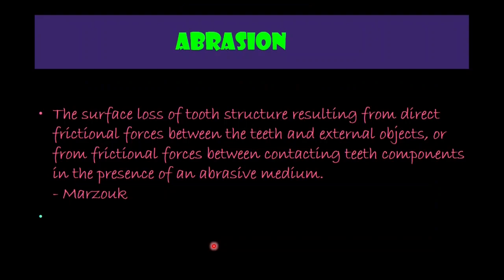Coming on to abrasion: abrasion results from friction between teeth and an exogenous agent. It is the mechanical wearing away of teeth due to friction between the teeth and an exogenous agent, and this mechanical process is independent of occlusion. It involves a foreign object or substance that repeatedly contacts the tooth. The size and pattern of the lesion are determined by the offending object. It is defined as the surface loss of tooth structure resulting from direct frictional forces between the teeth and external objects, or from frictional forces between contacting tooth components in the presence of an abrasive medium.